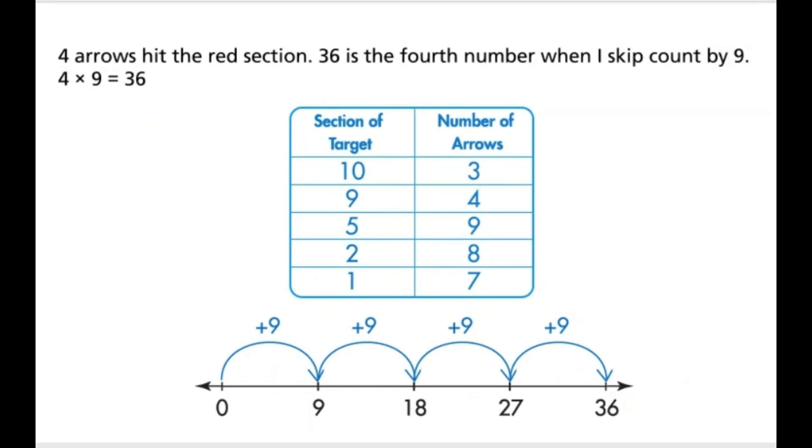4 arrows hit the red section. 36 is the fourth number when I skip count by 9. 4 times 9 equals 36.